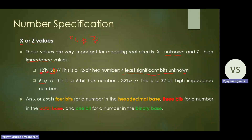Another example: '6'hx' — 6 is the size, 'h' is hexadecimal, and 'x' represents unknown values; this is a 6-bit hexadecimal unknown number. '32'bz' represents a 32-bit binary high-impedance number. Note that in hexadecimal base, x or z represents 4 bits; in octal base, each digit is 3 bits; and in binary base, it is 1 bit.